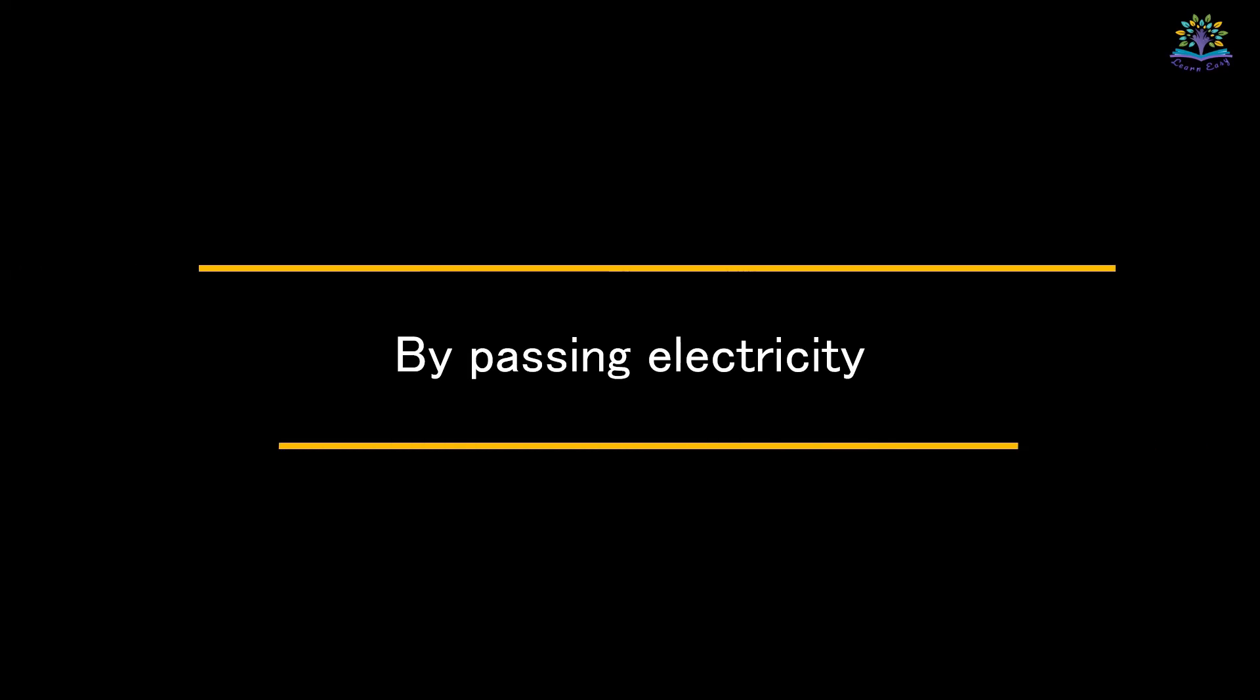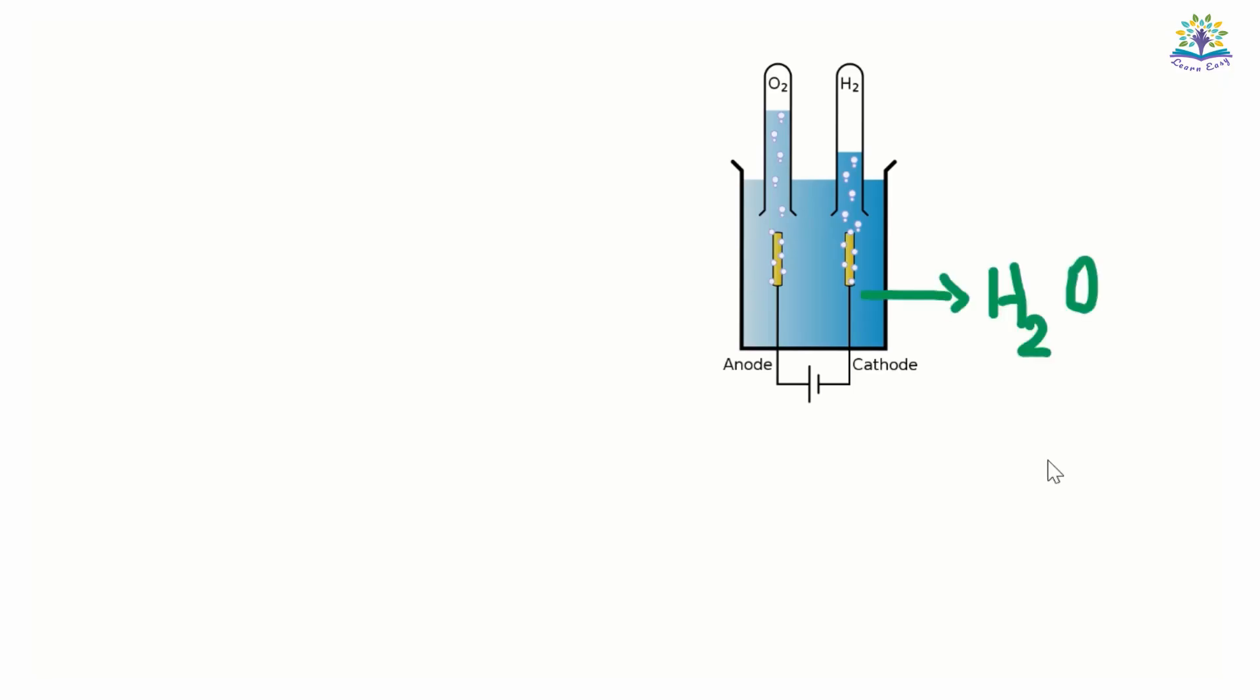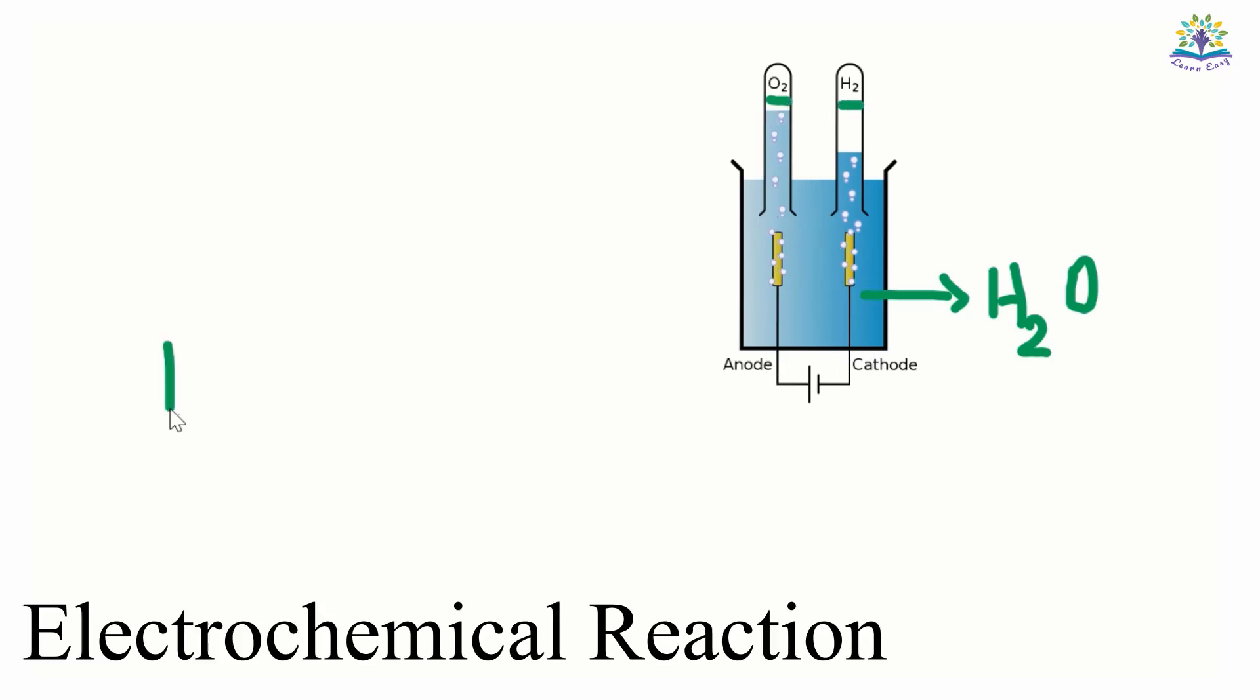To split water to get its components, we have to supply electricity. Take some acidified water and pass electricity through it. It splits to form hydrogen and oxygen. This type of reaction is known as electrochemical reaction. It is widely used in metallurgy to extract an element from its compound.